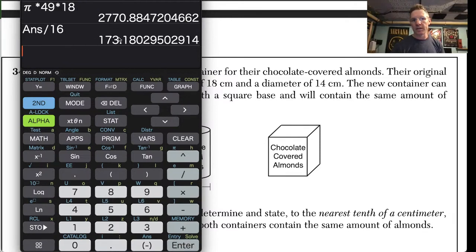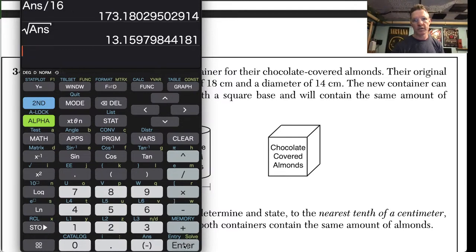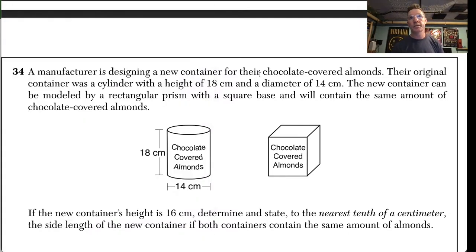Now this is the number I want to take the square root of, so I would hit second, this second answer, enter. So 13.16 to the nearest tenth.